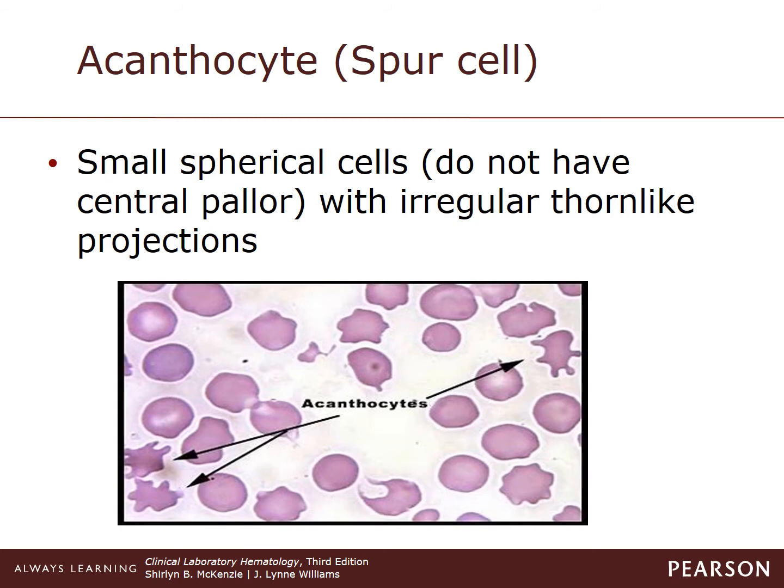Remodeling by the spleen results in spheroid cells with an irregular surface projection, and these cells are readily trapped within the spleen and destroyed.